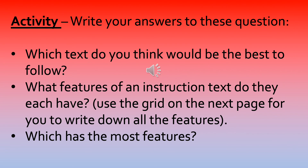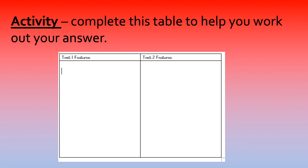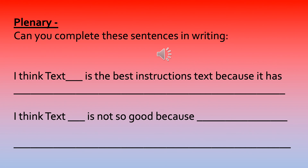Activity: write your answers to these questions by using the following two versions of how to plant a sunflower seed. The questions are: which text do you think would be the best to follow? What features of an instruction text do they each have, and which has the most features? Plenary: can you complete these sentences in writing — 'I think text [something] is the best instruction text because it has...' and 'I think text [something] is not so good because...' Complete the sentences by telling me what features of instructions each of the texts have.